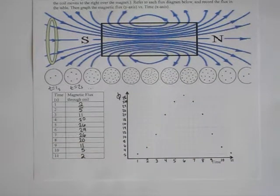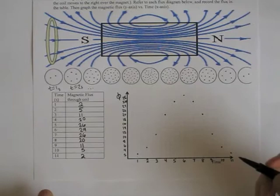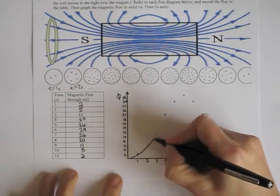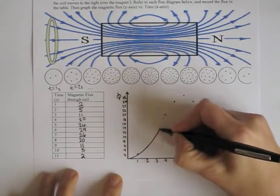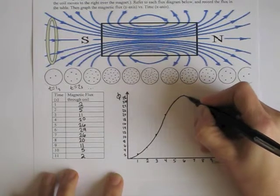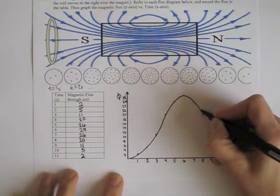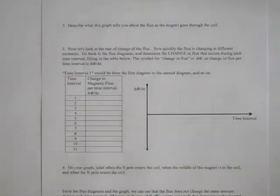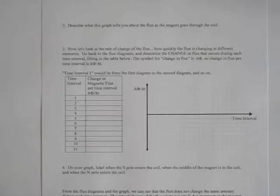I have plotted the flux and connected it with a smooth curve to show the basic shape. Moving on to question two, describe what this graph tells you about the flux as the magnet goes through the coil.